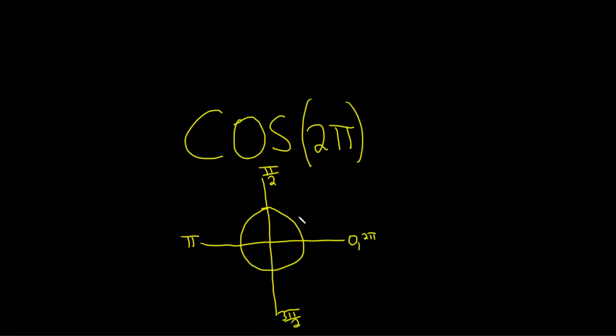So we're interested in the cosine of 2π. So on the unit circle, a key fact is that every ordered pair has the form cosine θ, comma, sine θ.